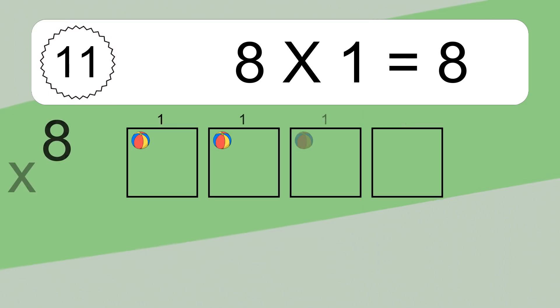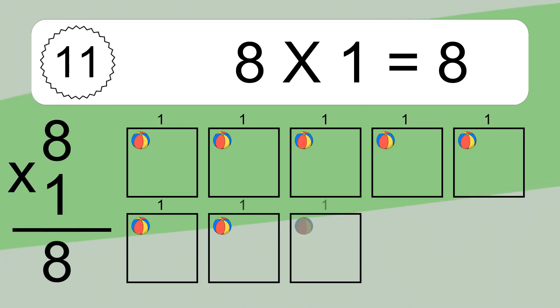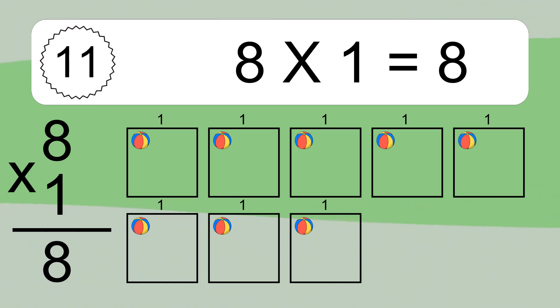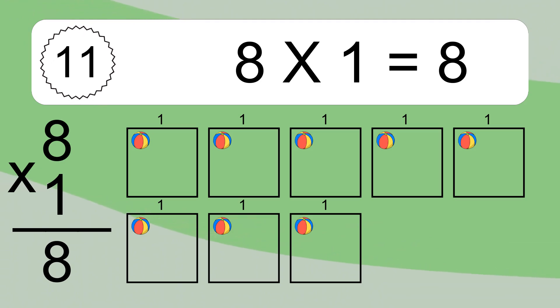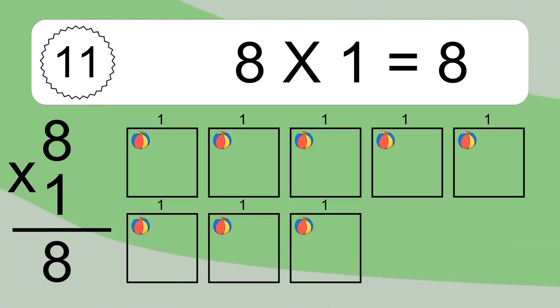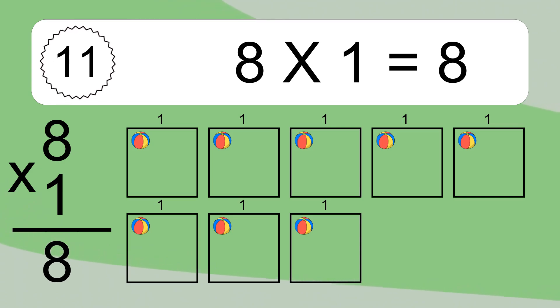8 times 1 equals 8. We have 8 boxes and each box has 1 colorful ball inside. If you count all the balls in all the boxes together, you will have 8 times 1 balls.